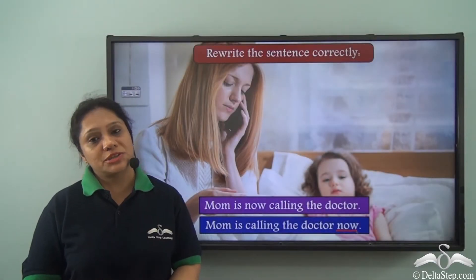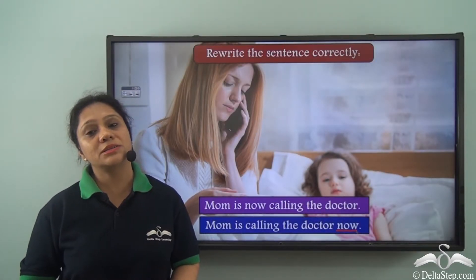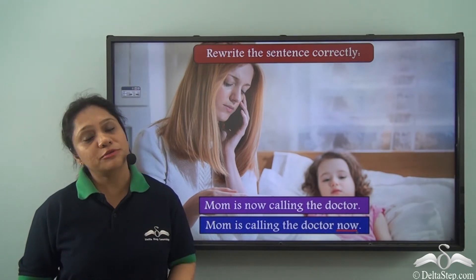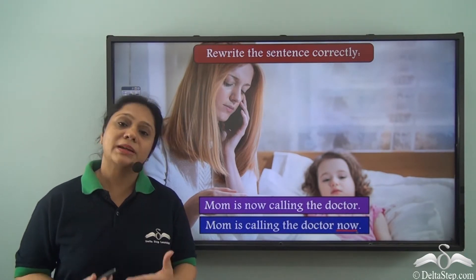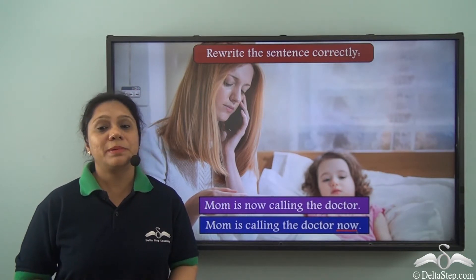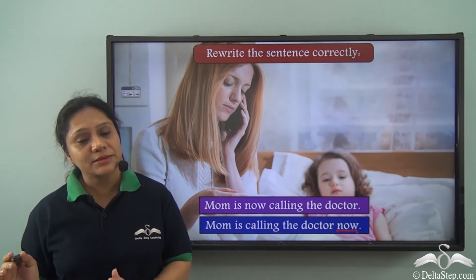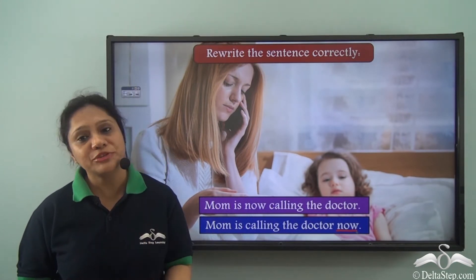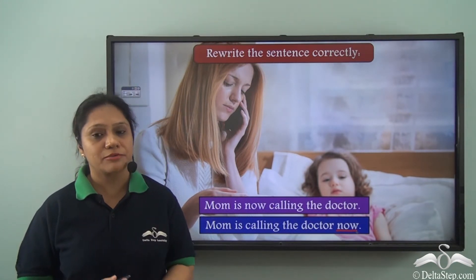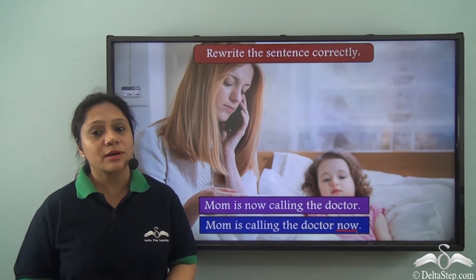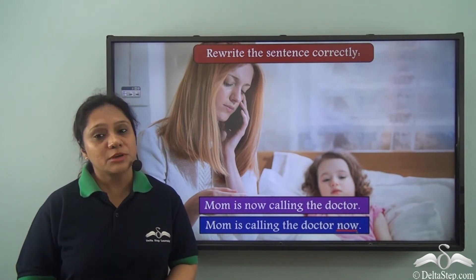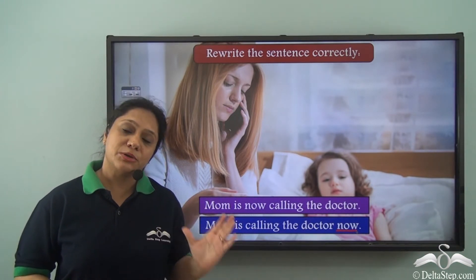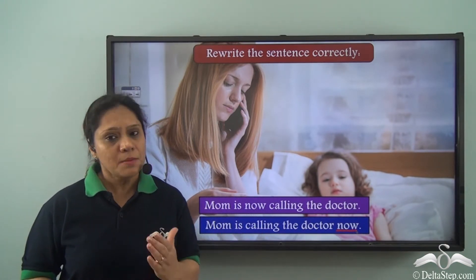So what did we learn today? Today we have learnt about the various placement rules of adverbs of time in a sentence. Adverbs of time can be placed either at the end or at the beginning of a sentence, depending on the emphasis we want to put on the adverb. We have also learnt that only adverbs of time like 'already' and 'still' can be placed between the auxiliary verb and the main verb.